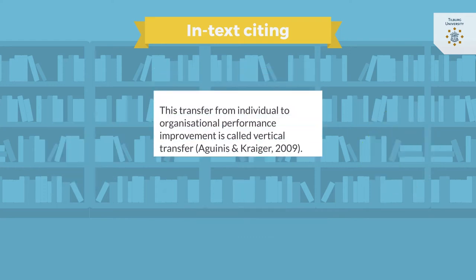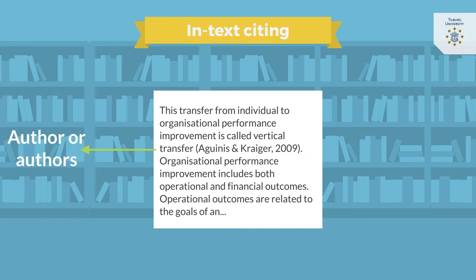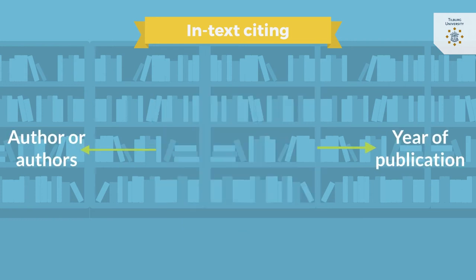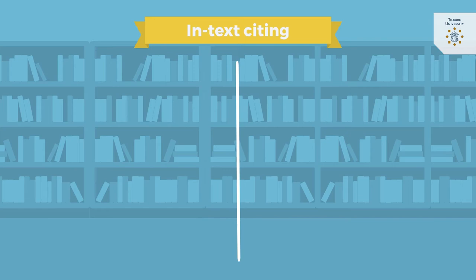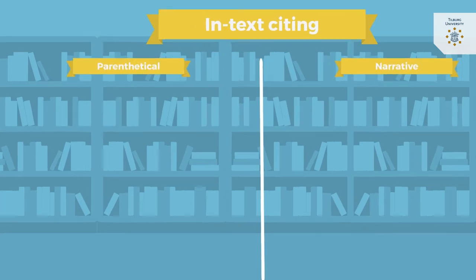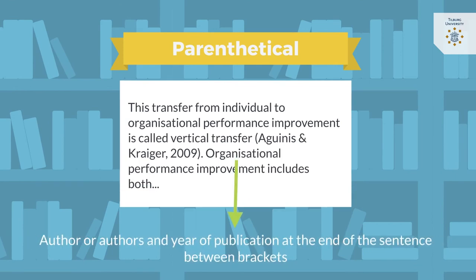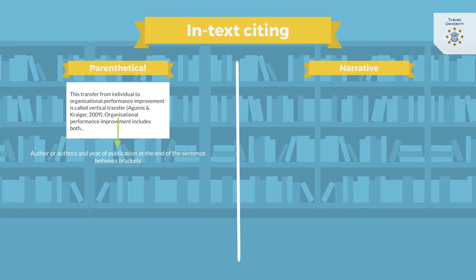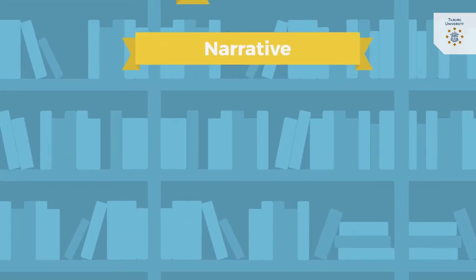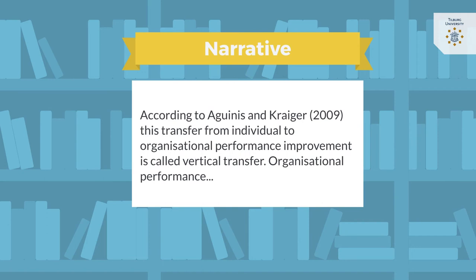An APA in-text citation consists of the author's last name and the year of publication. There are two forms of in-text citation: parenthetical and narrative. In the parenthetical citation, the author name or names and year of publication is at the end of the sentence between brackets. In the narrative citation, the names of the authors are in the text and the year of publication is included directly after the author name, again between brackets.